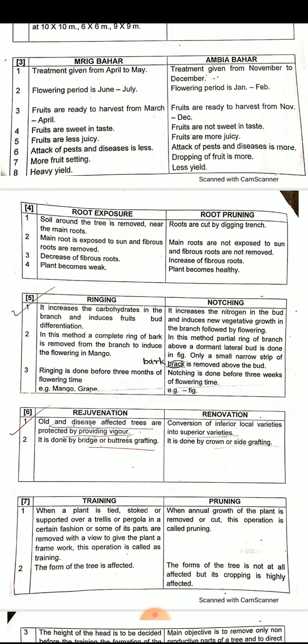Next difference: ringing and notching. Ringing means removal of a complete circular ring of bark from a branch. Notching is a partial ringing — only some part of the bark is removed. In ringing, it increases carbohydrate in the branch and induces fruit bud differentiation, promoting more flowers and fruits.